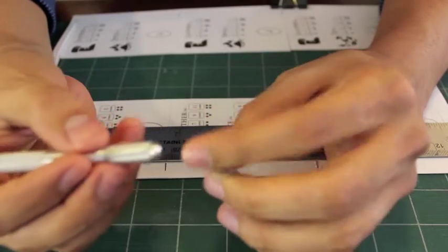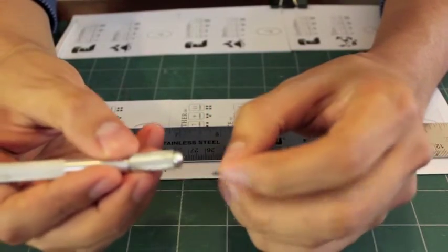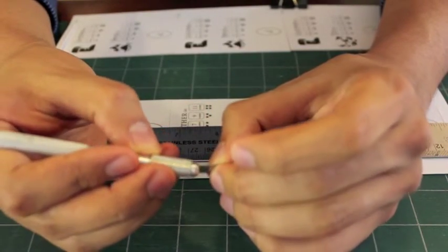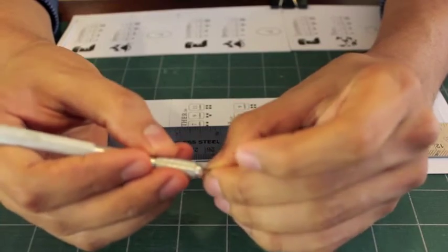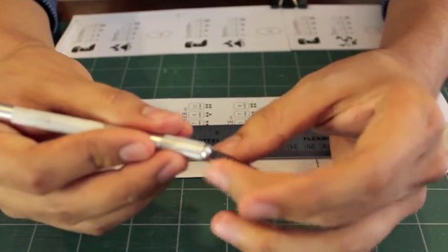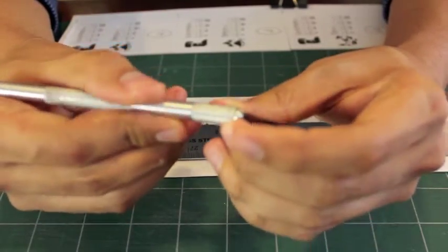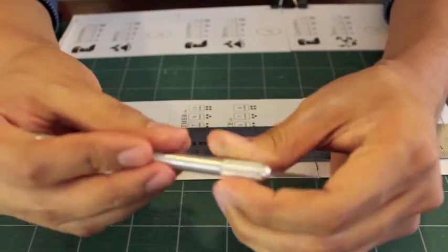It's also something to be careful of when you're using an exacto blade - when you're inserting the blade, keep it screwed on tight so it doesn't pop out at inopportune moments like this.